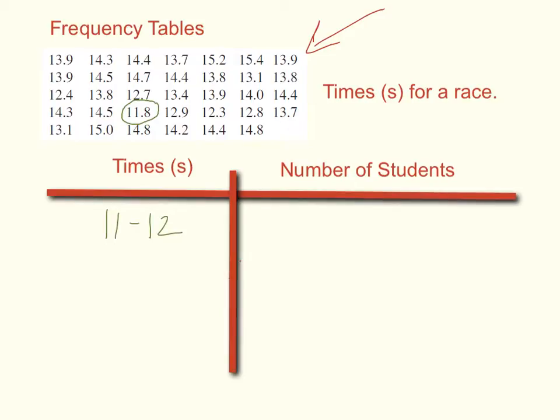So my time between is I'm going to start with 11 to 12 seconds. And as far as I can tell, I have only one. So one student who ran between 11 to 12 seconds. Really important that I cross them out as I go or find a way to take a look at them, because otherwise, if I miss any, my data is going to be far off.